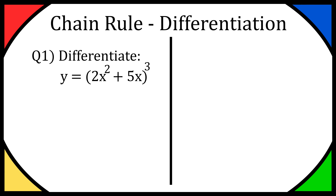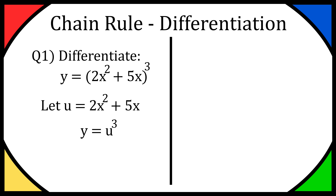Hey everyone, so today I'm going to be explaining the chain rule for differentiation. This one's not too hard, but let me know if you have any questions and I'll answer them down below. So question one: differentiate y is equal to 2x squared plus 5x, all cubed. Because we have a function all cubed, we're going to use the chain rule. First thing you want to do is let u equal 2x squared plus 5x — let u equal whatever is in the brackets — so that means y is going to be equal to u cubed.